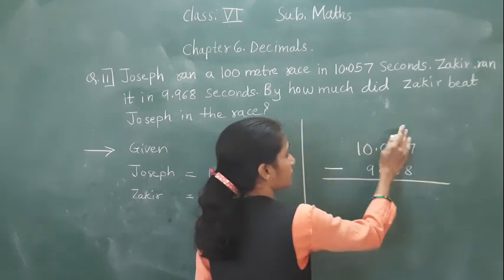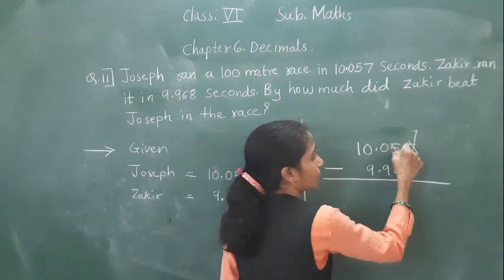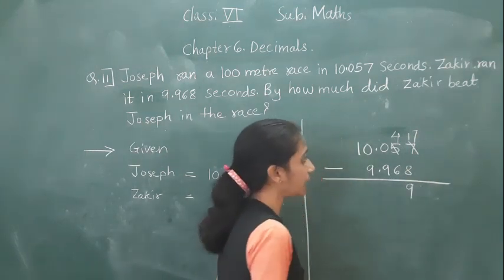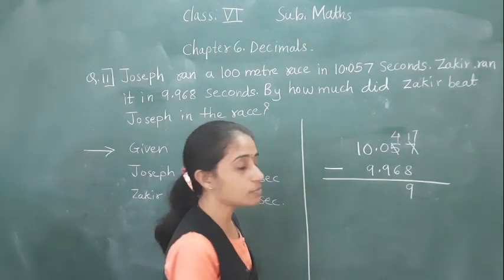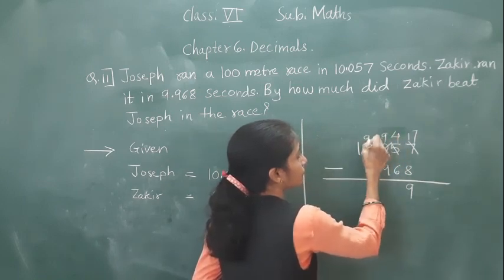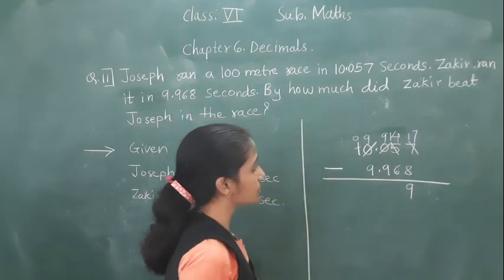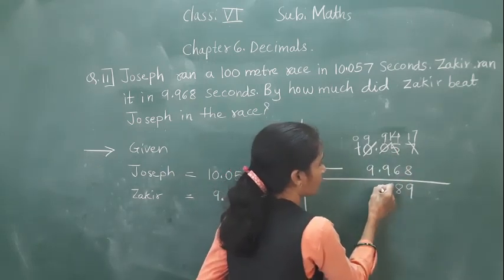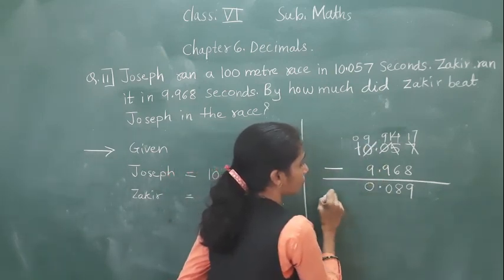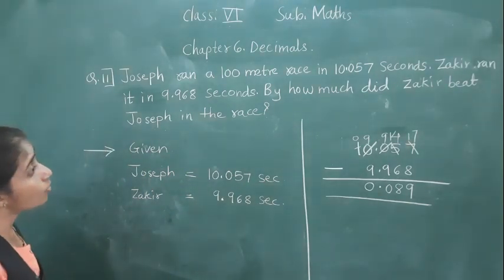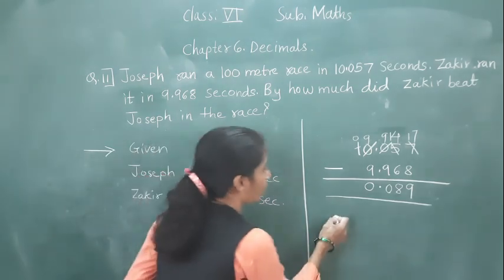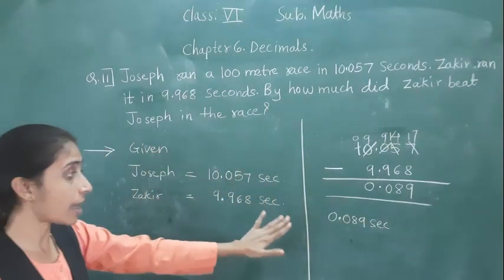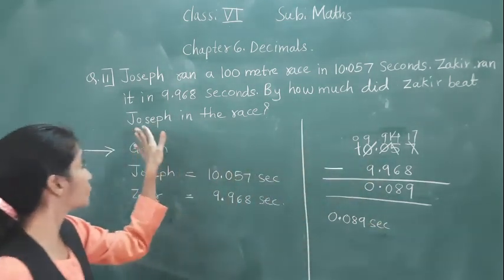7 minus 8 is not possible, so take borrow. 17 minus 8 is 9. 4 minus 6 is not possible, so take borrow — 14 minus 6 is 8. 9 minus 9 is 0. Decimal point. 0 minus 9 is 0. So by how much did Zakir beat Joseph in the race? By 0.089 seconds. Zakir beat Joseph in the race by 0.089 seconds.